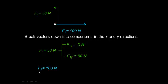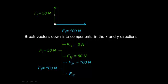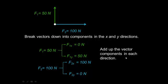We can do the same thing for vector F2, breaking it down into the component in the x direction and the component in the y direction. The force is directed completely along the x-axis, so the component of F2 in the x direction is 100 Newtons, and since it doesn't act in the y direction, that component is 0 Newtons. This is important because we have to add up the vector components in each direction — it's good to develop good problem-solving habits, even for the simplest problems.